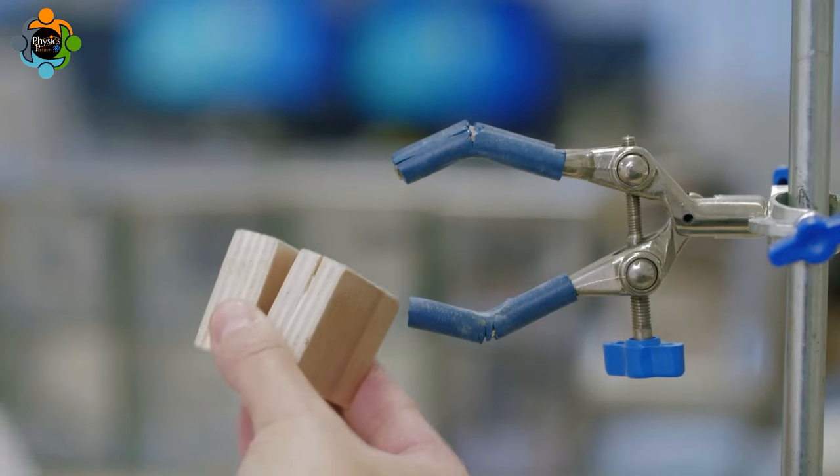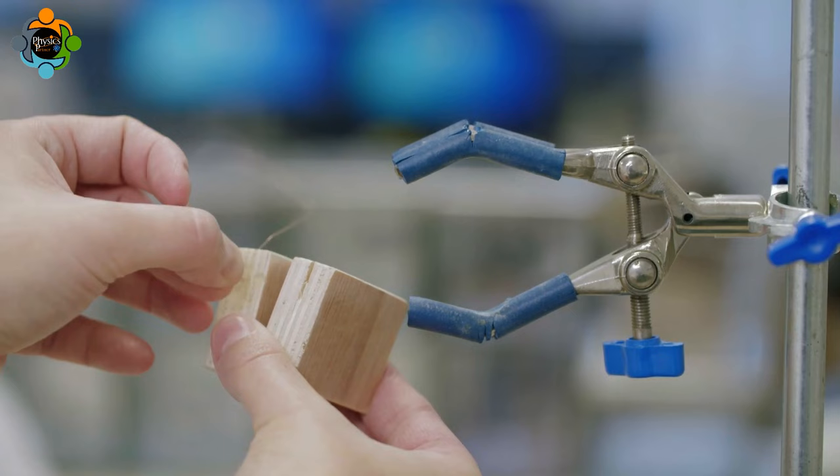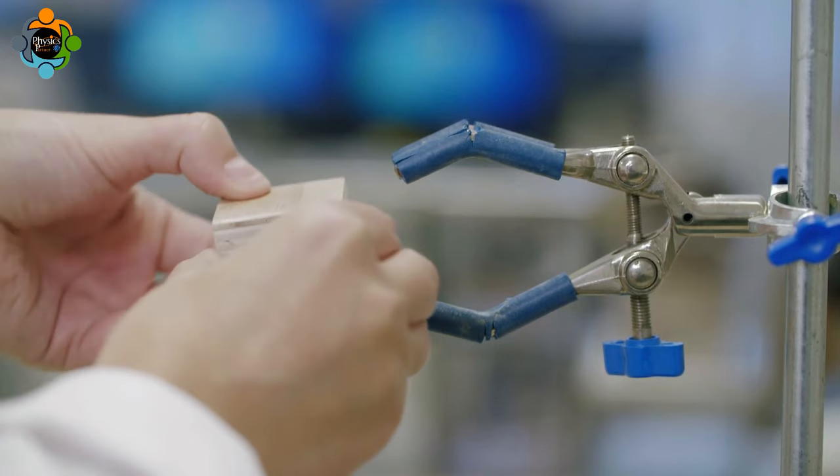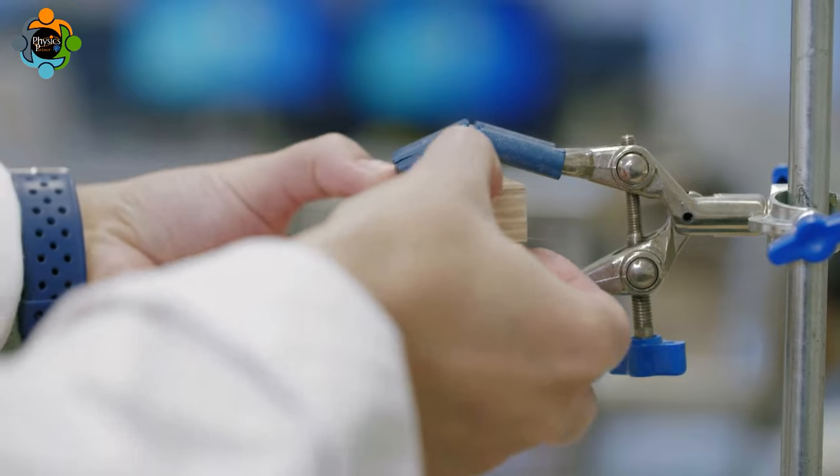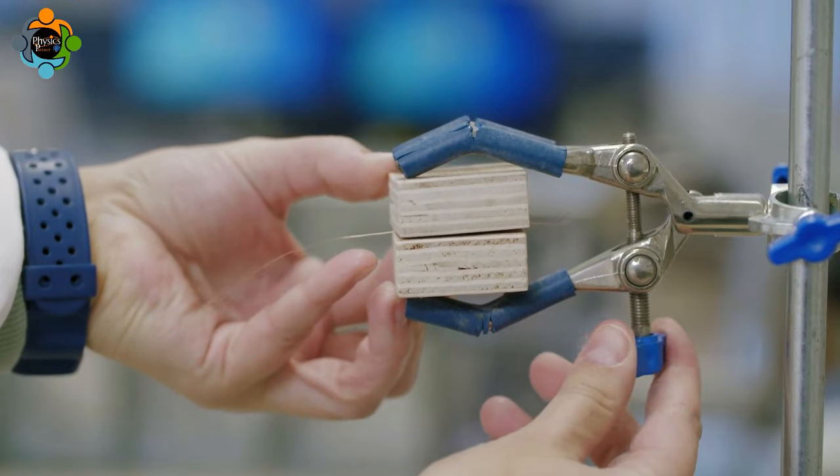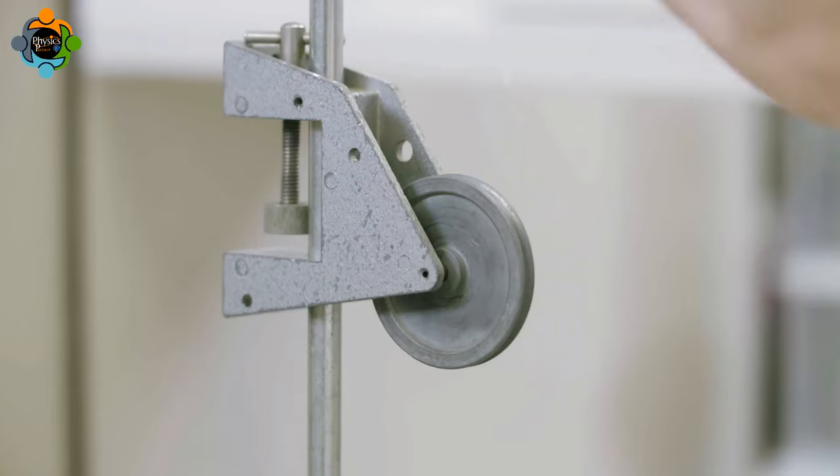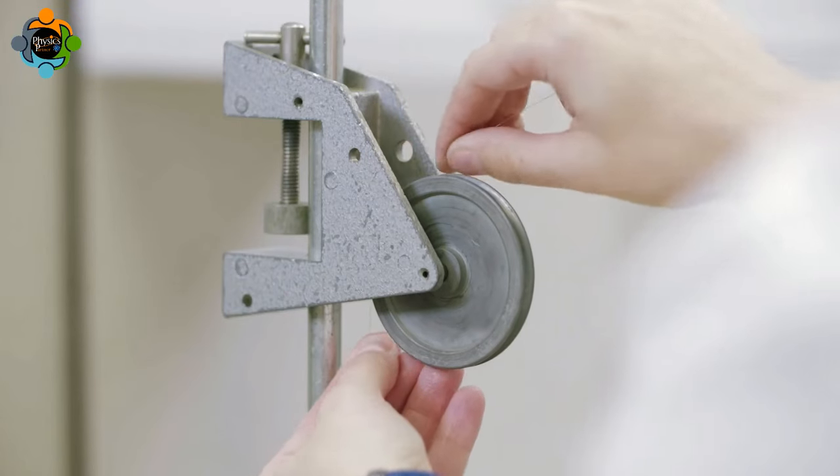The copper wire is passed between two wooden blocks. The blocks are clamped in position one meter from the pulley. Care is taken to ensure the clamp is fully tightened. The other end of the wire is passed over the pulley and attached to a mass hanger.